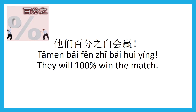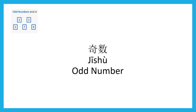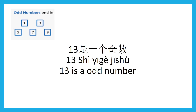Percentage — 百分之 (bǎifēnzhī). They will 100% win the match — 他们百分之百会赢 (tāmen bǎifēnzhī bǎi huì yíng). Odd number — 基数 (jīshù). 基数, 基数. 13 is an odd number — 十三是一个基数 (shísān shì yīgè jīshù).